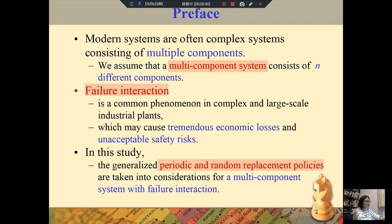First, we introduce our paper. Modern systems are often complex systems consisting of multiple components. We assume that a multi-component system consists of n different components. Failure interaction is a common phenomenon in complex and large-scale industrial plants, which may cause tremendous economic losses and unacceptable safety risks. In this study, the generalized periodic and random replacement policies are taken into consideration for a multi-component system with failure interaction.